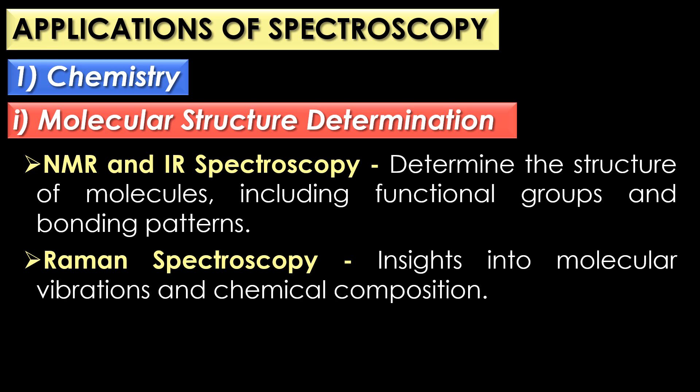In chemistry, spectroscopy is used for molecular structure determination, quantitative analysis and reaction monitoring. In molecular structure determination, techniques like NMR and IR spectroscopy are used to determine the structure of molecules including functional groups and bonding patterns.